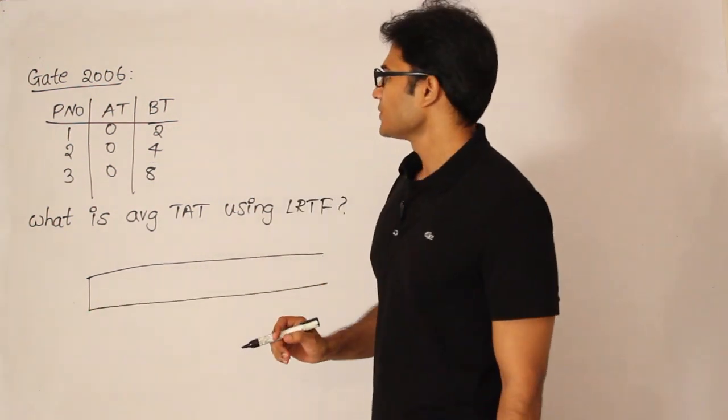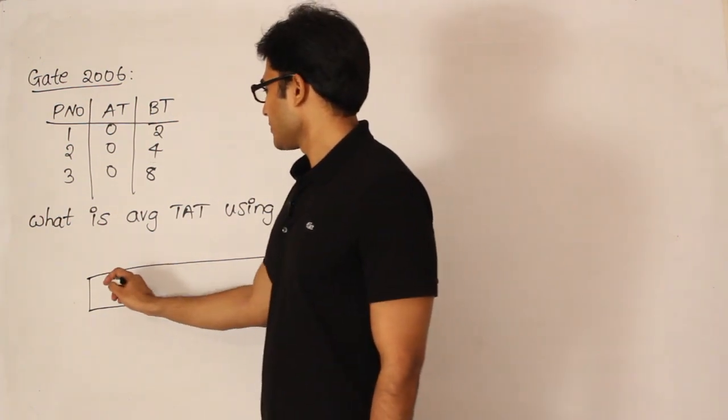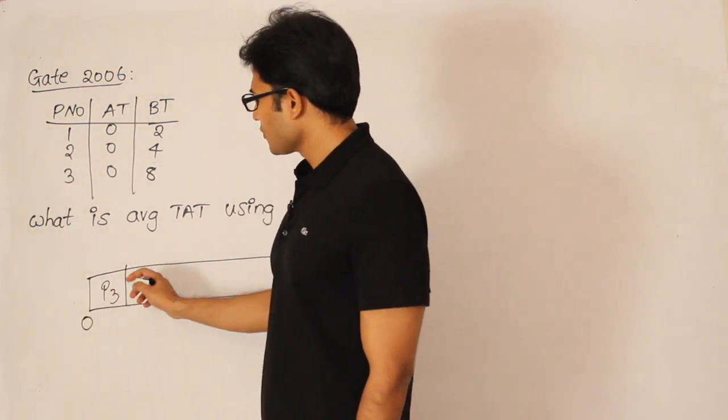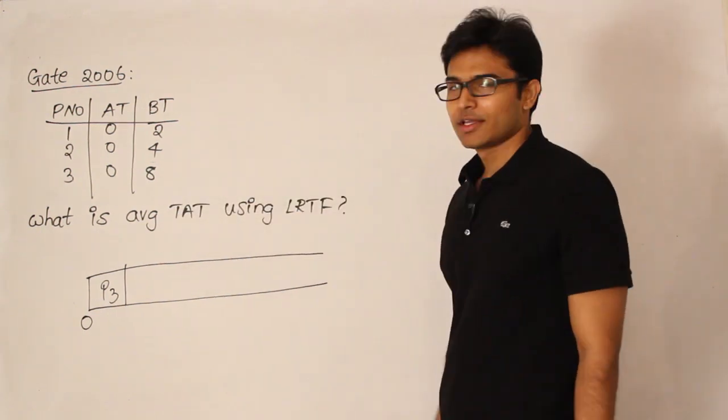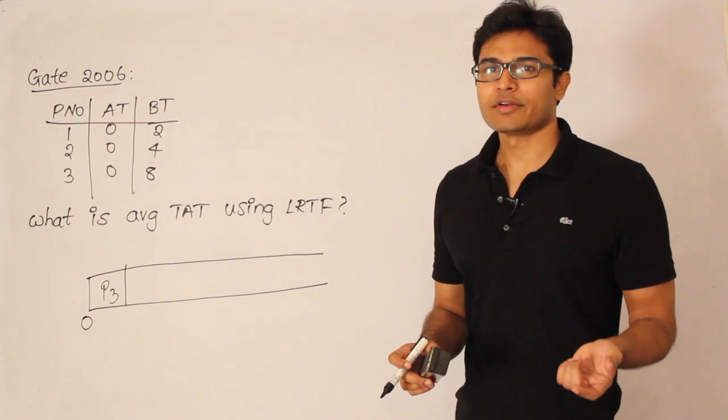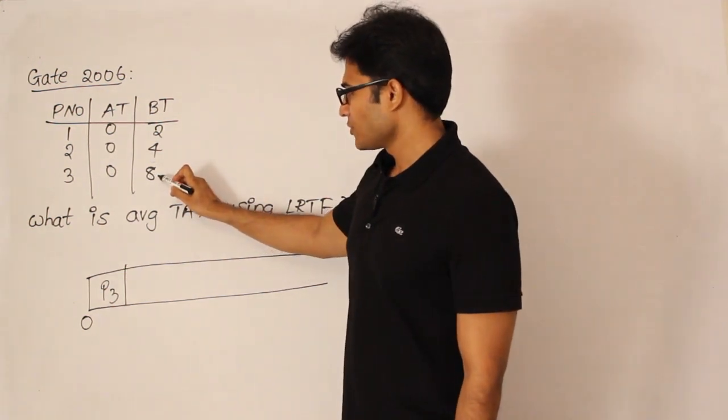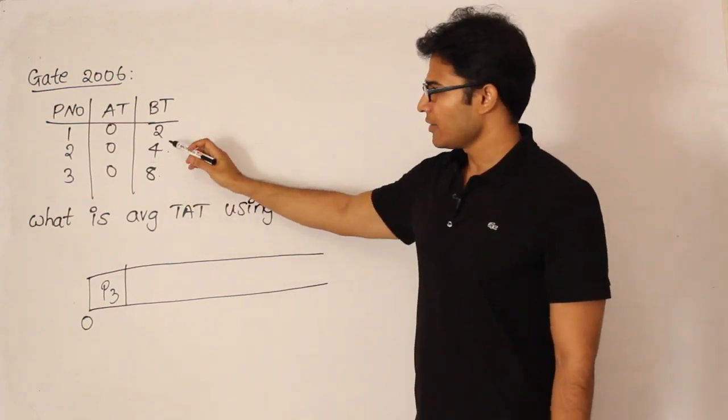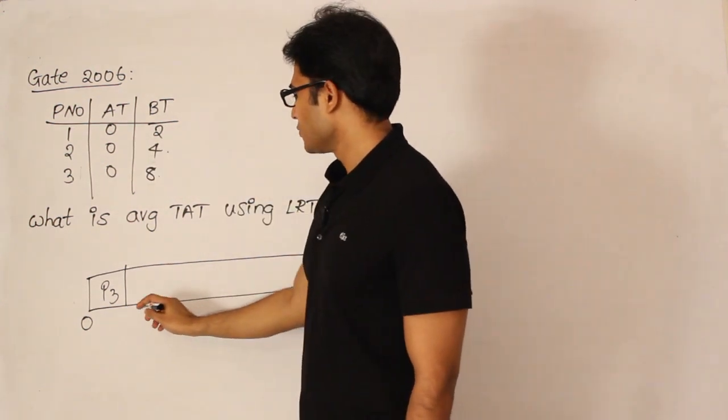First thing is which one is the longest one? Obviously longest one is P3. So now I'm going to schedule P3 from 0. Then how long should I execute it? Can I execute till 8? No, because in the middle itself some other process might become the longer one. Therefore how long should you execute it? Check this - if I execute it for 4 units then the next one will become 4 and there will be a tie, and then tie will be broken using the process IDs.